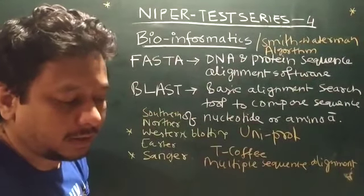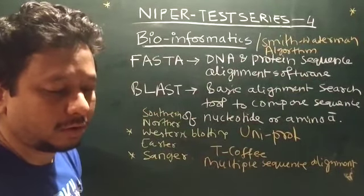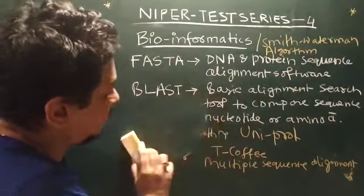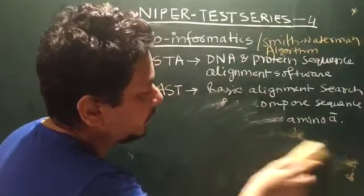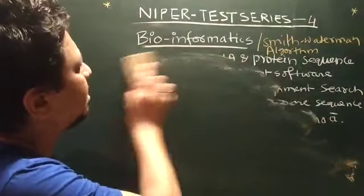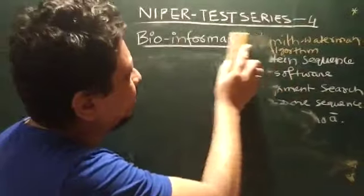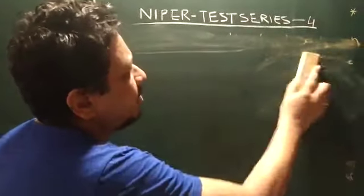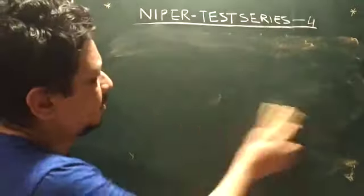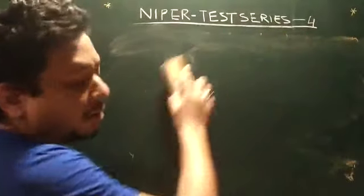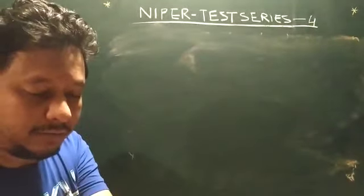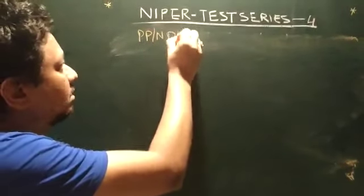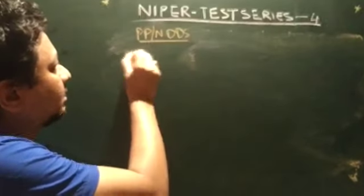These are the things in bioinformatics you have to study. Then the next topic — let us go ahead for physical pharmacy and novel drug delivery systems. Now for physical pharmacy and the novel drug delivery system, you start with surfactants.